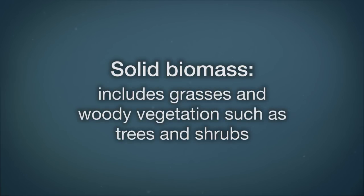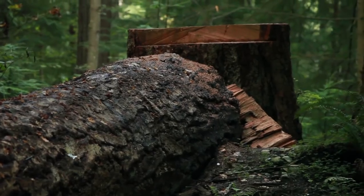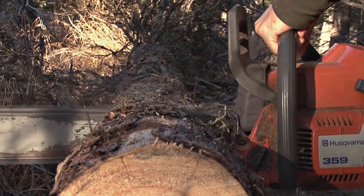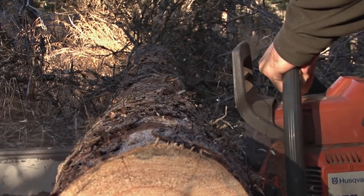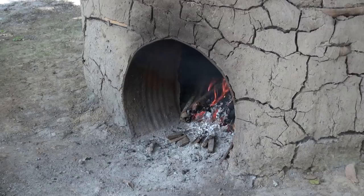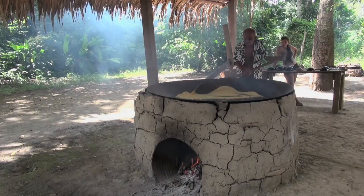Solid biomass is an energy from the sun that we should talk about, referring to things like grasses and woody vegetation like trees and shrubs. The advantages to using solid biomass are that it's a potentially renewable modern carbon source and is highly available in many parts of the world. In some cases, using solid biomass like woody debris or animal dung eliminates waste from the environment. There is also minimal technology required to do the burning of most biomass.